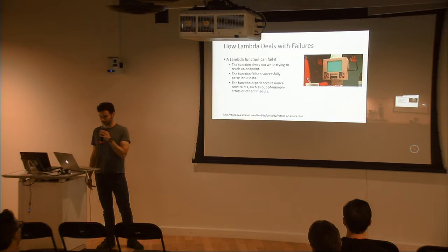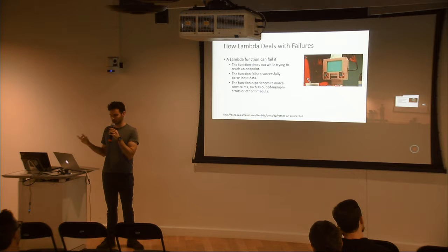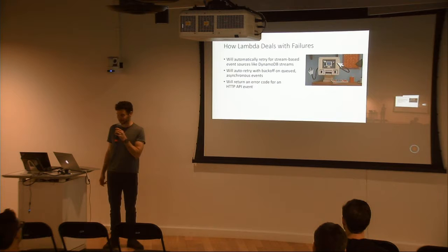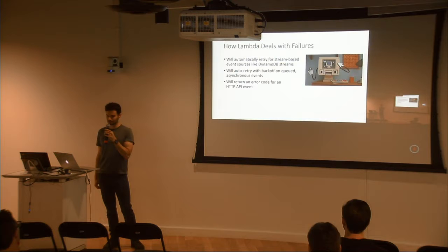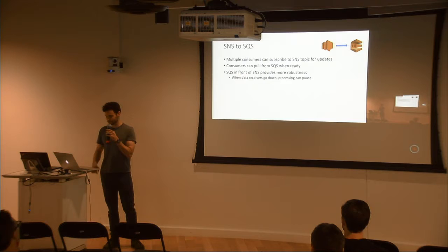Failures in Lambda are handled by AWS. The function could potentially time out when trying to reach an endpoint, bubble up an exception, fail to parse input data, or run out of constraints. In our case for DynamoDB Streams, it'll actually retry that for you automatically — I haven't tested this, but that's what the AWS documentation says. Or if you have a synchronous event like tying API Gateway over to Lambda, it'll emit an error code which bubbles up to the gateway, and you'll have to retry on your end for whatever is hitting that gateway endpoint.